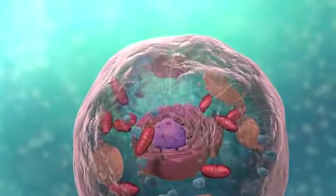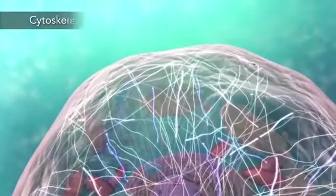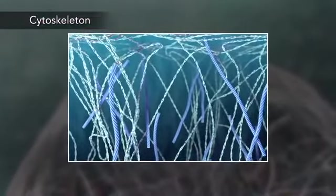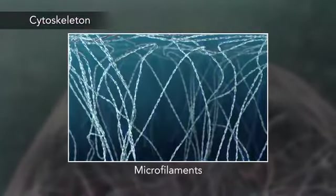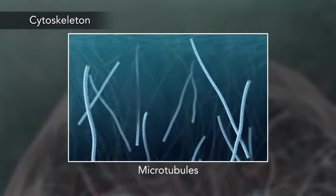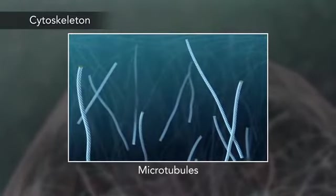Meanwhile, the cell maintains its shape through a cytoskeleton. The cytoskeleton includes the thread-like microfilaments, which are made of protein, and microtubules, which are thin, hollow tubes.